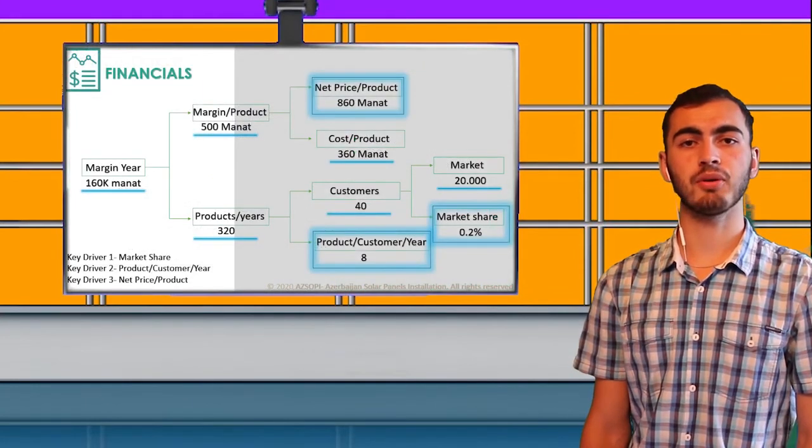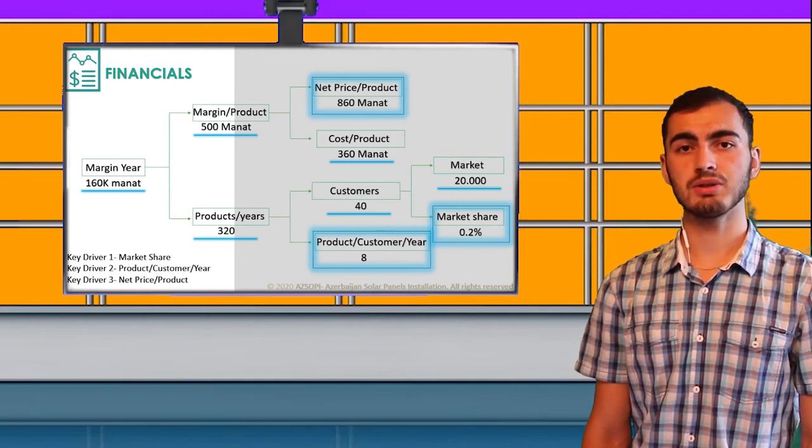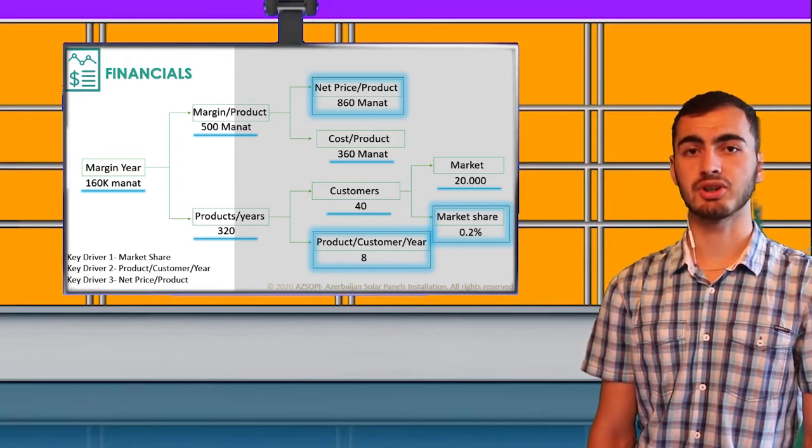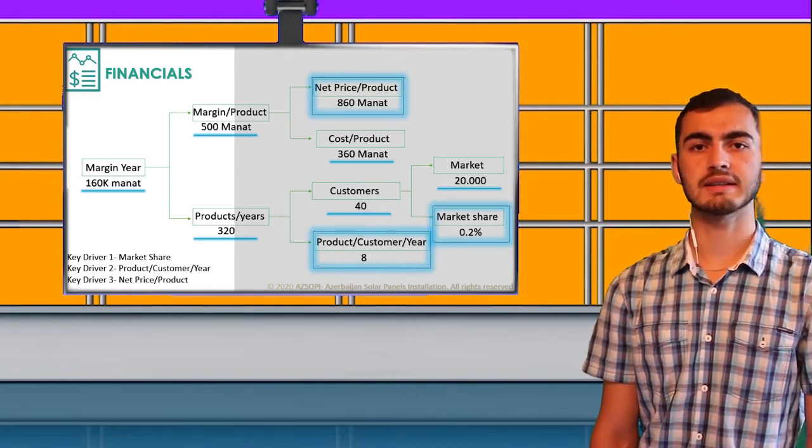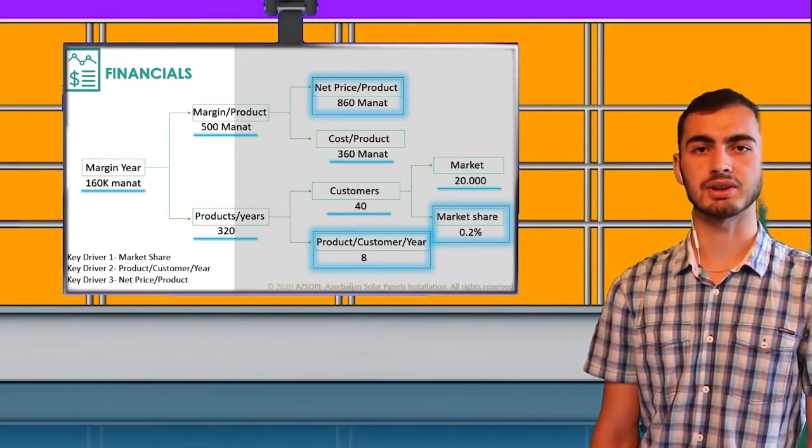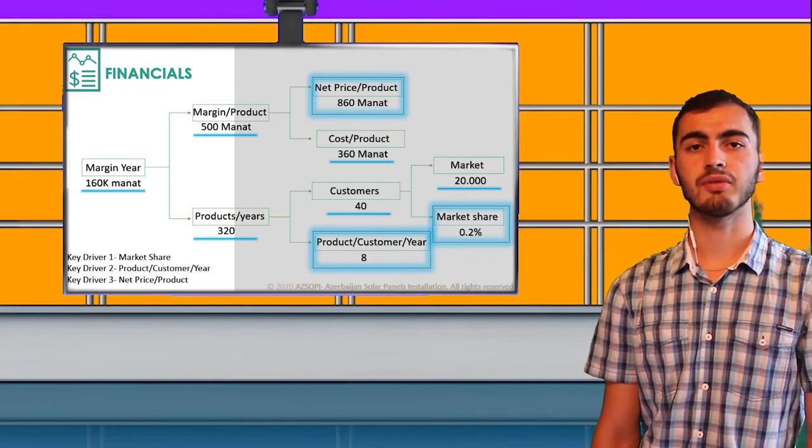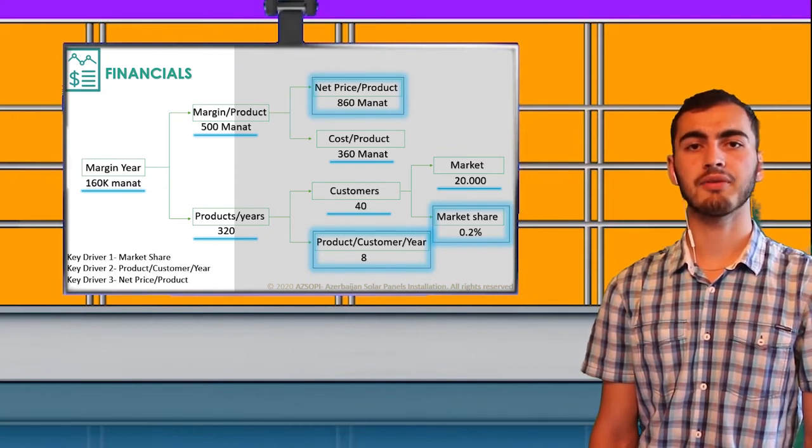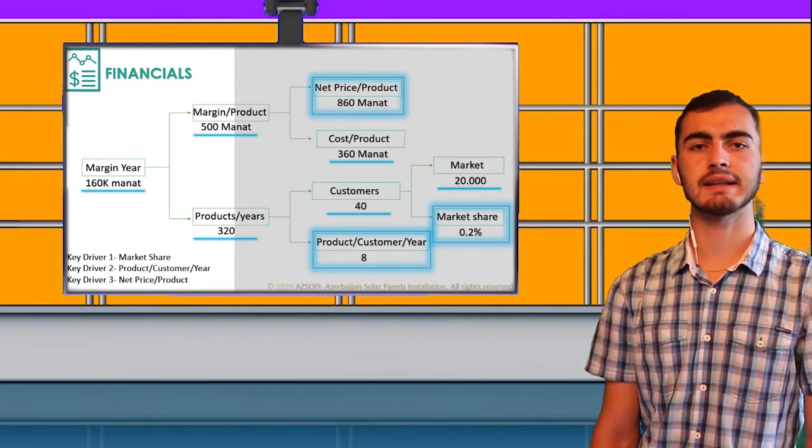So we keep a place of 0.2% of market. If there are 20,000 people in the market, we assume we will have 40 customers. If we can sell 8 products per year to each customer, we can sell 320 products per year totally. We know the cost of this product is 360 manats, but we will add selling price and revenue from installation, so net price will be 860 manats. The margin of each product is 500 manats. So 320 products per year times 500 manats for each makes our margin 160,000 manats at the end of the year.